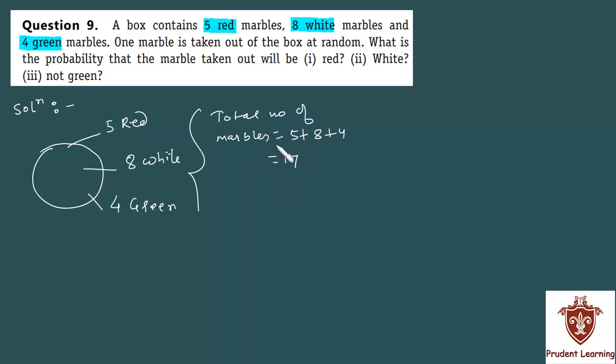This is your total number, this is your total number of possible outcomes. Therefore, total number of possible outcomes is 17.